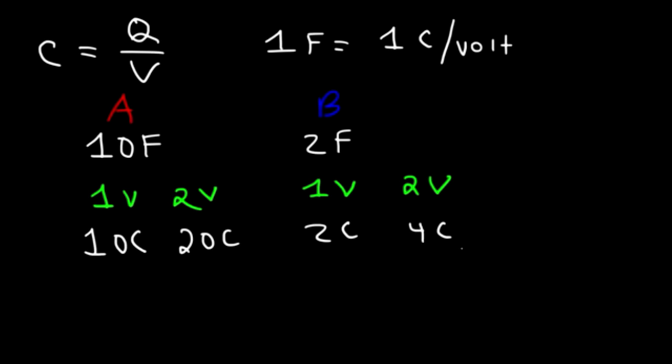It's how much charge you can hold per volt. As you increase the voltage, you can hold more charge. But if you look at capacitor A, it's more efficient — it can hold 10 coulombs of charge per 1 volt, whereas capacitor B can only hold 2 coulombs of charge per volt. So the higher capacitance means that you can store more charge per volt.